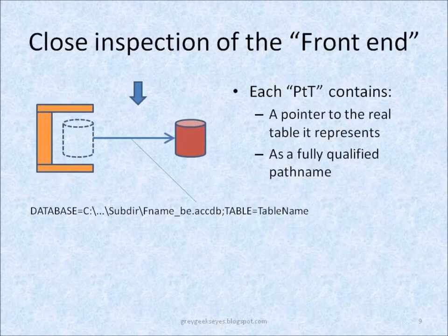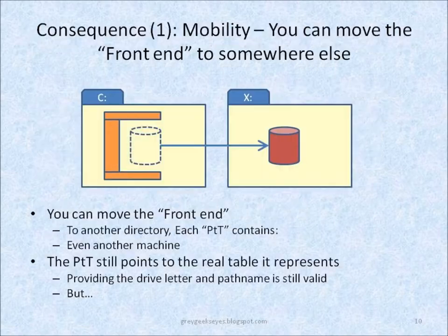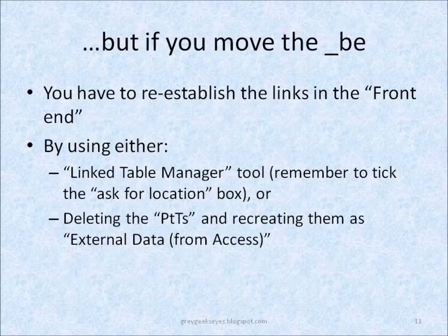If you look closely at the pointers to tables, you will find that they contain the fully qualified path name of the objects to which they are pointing. As a result, you can move the front-end to anywhere where it can still see the back-end. But moving the back-end will create some work.